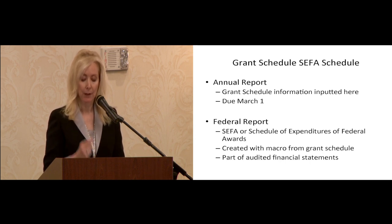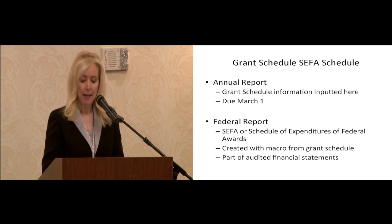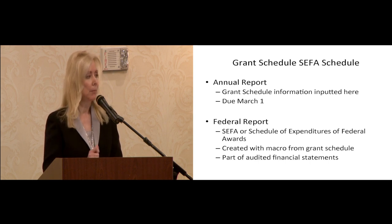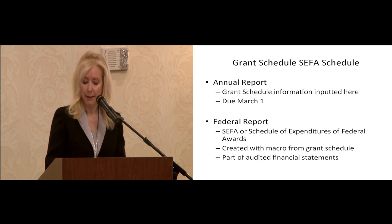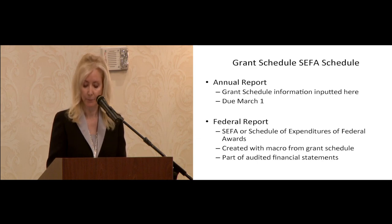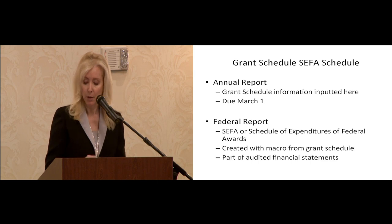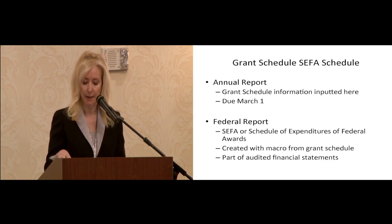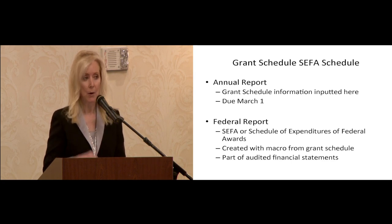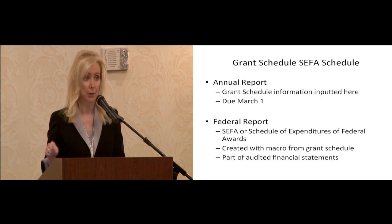There have been changes to the annual report with the addition of two additional columns asking for more information. In addition to the disbursements, you will also have to provide the receipts. You will identify the grant activity as either advance or reimbursement basis grant. The other areas to populate really haven't changed. We'll go over these briefly and then concentrate on the disbursements, receipts, advances, and reimbursements, and show how these amounts will result in your CEPA.